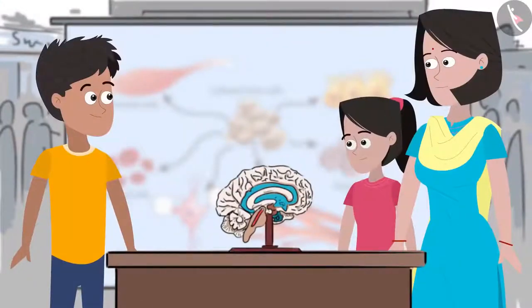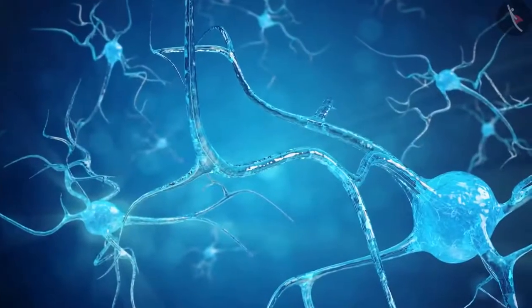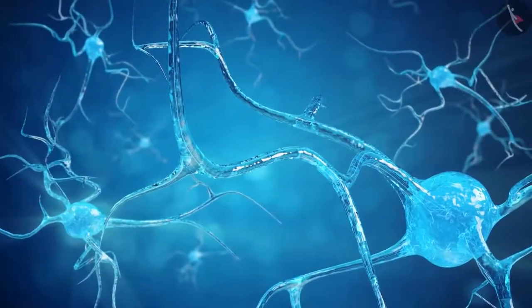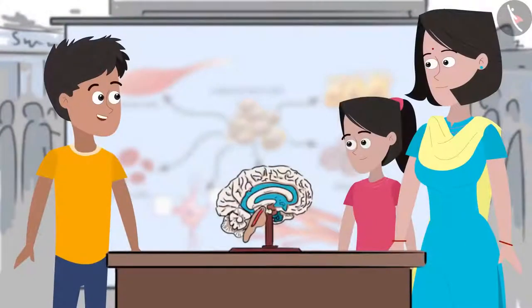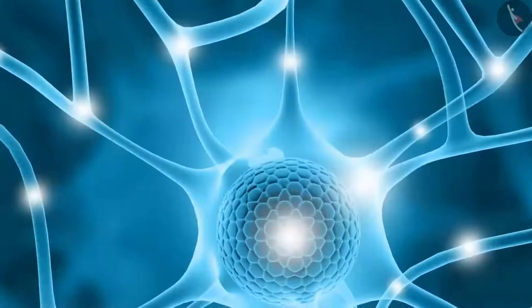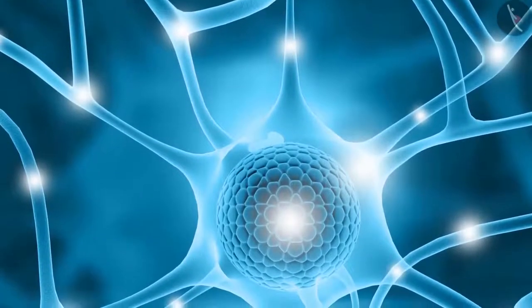And what is this? Brain cells, neurons. Oh, here I am showing the cells that the brain is made up of. They are called neurons.